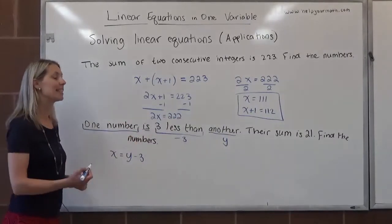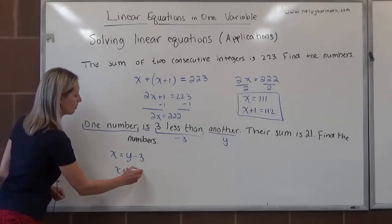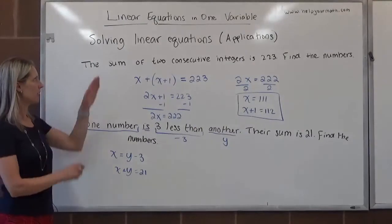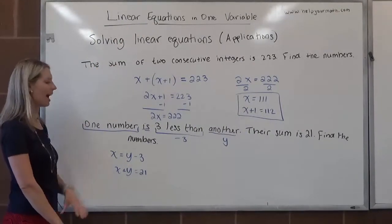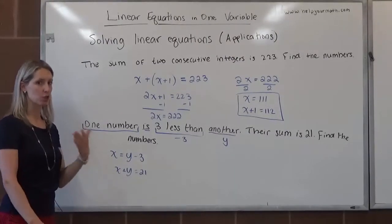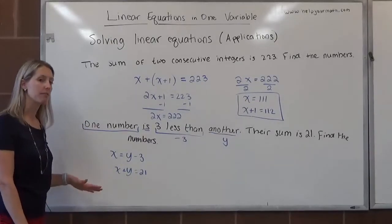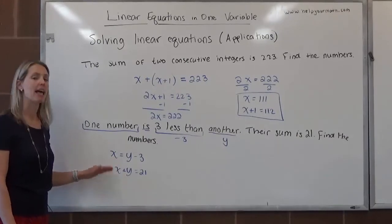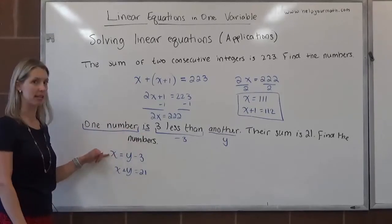The second sentence says, their sum, the sum of these two numbers, x plus y, is 21. And now we want to find the numbers. Now this is deceiving because this was supposed to be a linear equation in one variable and here I see that we have two variables. We're going to use something called substitution so that we have just one equation in one variable. Based on the information we're given, we know that x is the same as y minus 3. So anywhere I see an x, I can replace it with y minus 3 and that's the same thing.